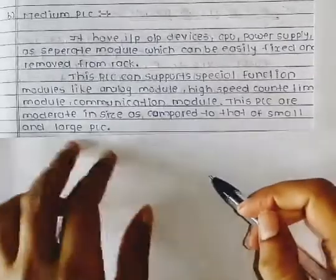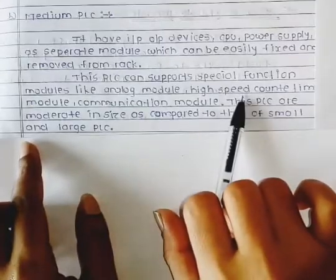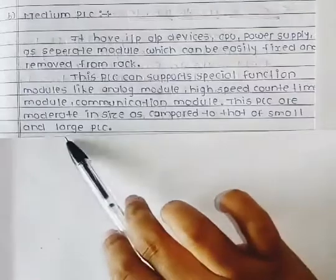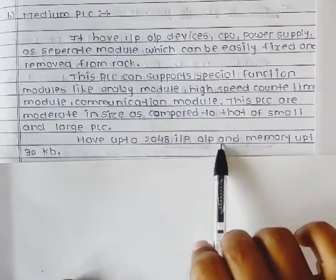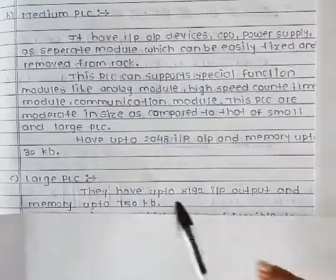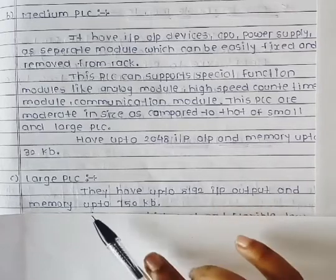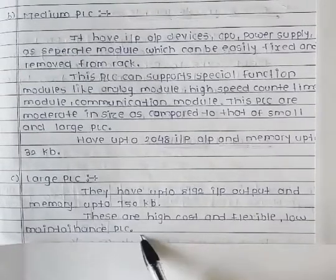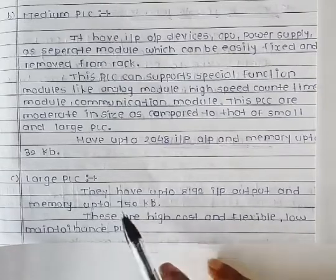This PLC is moderate in size as compared to small and large PLC, and has up to 248 inputs and outputs with memory up to 32 KB. The large PLC has up to 8192 inputs and outputs with memory up to 750 KB. These are high cost, flexible, and low maintenance PLCs.